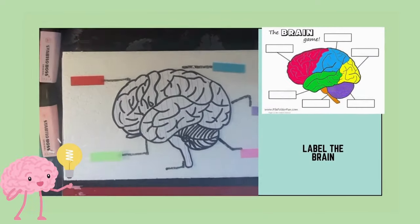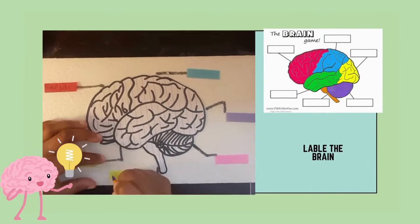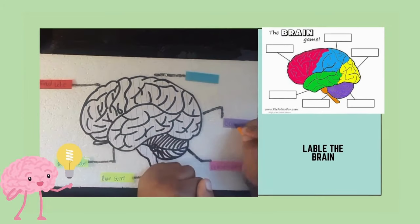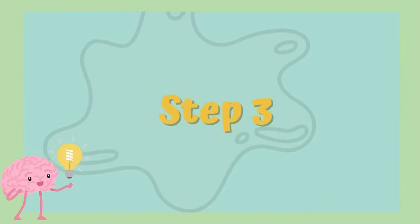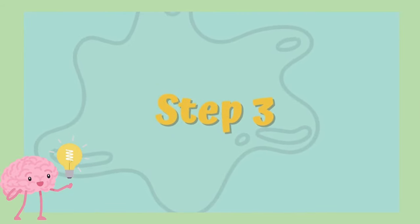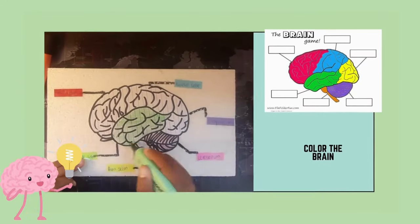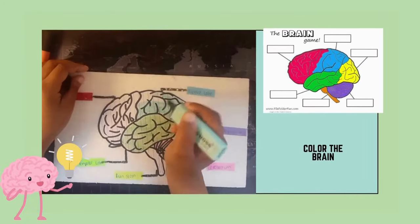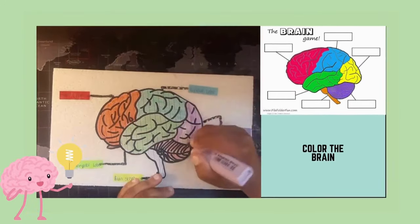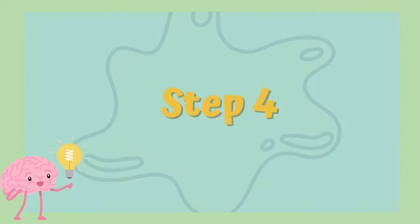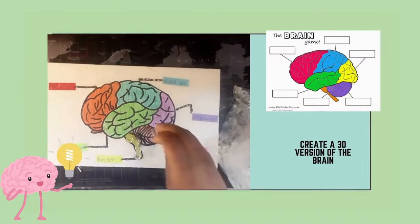Step 2: Label the brain with colorful sticky notes so you know what each section is. Step 3: Color code each section of the brain so it becomes visually pleasing.